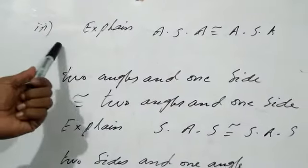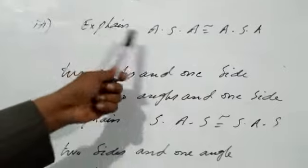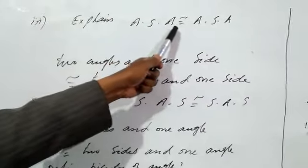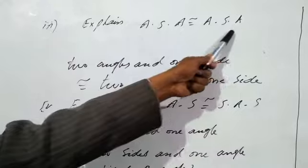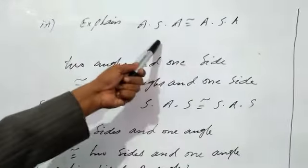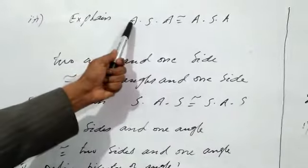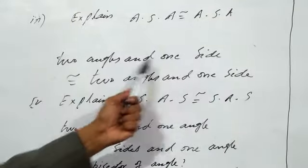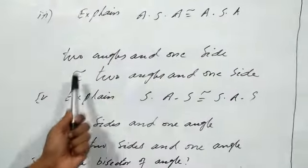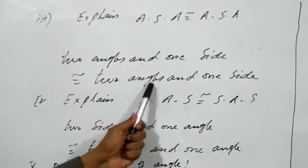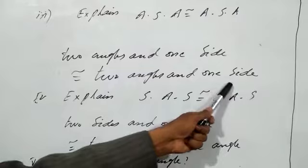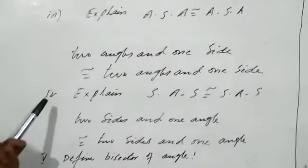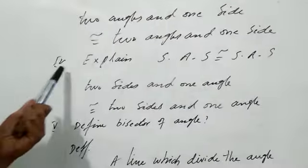The third definition explains the ASA congruence postulate, which means two angles and one side congruent to two angles and one side of another triangle.